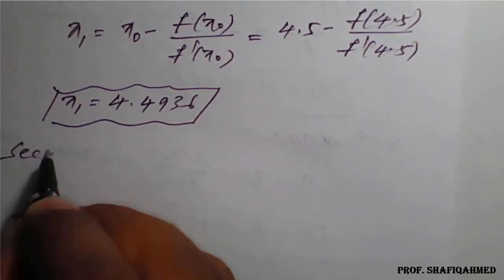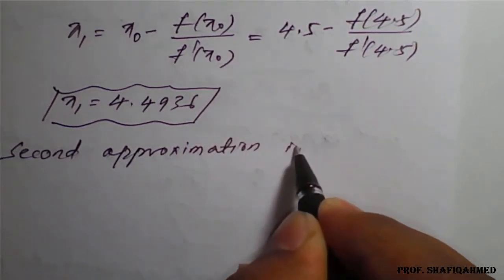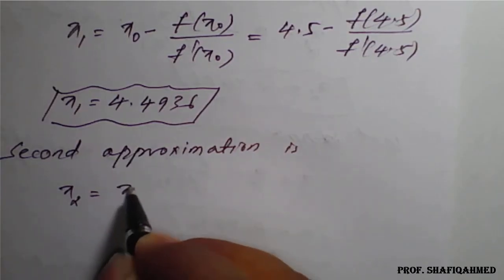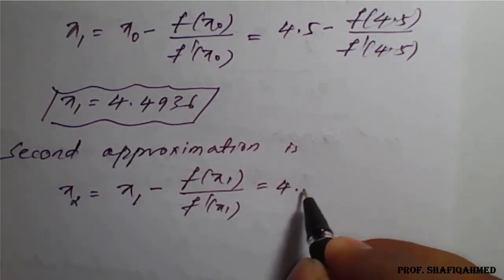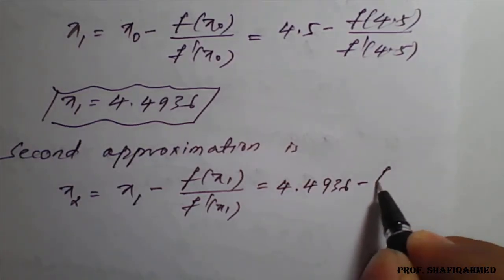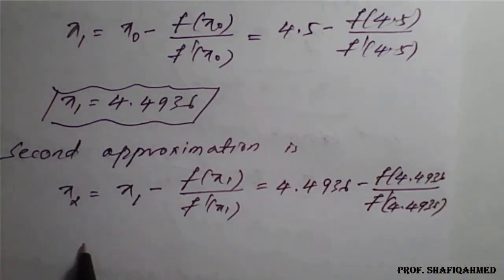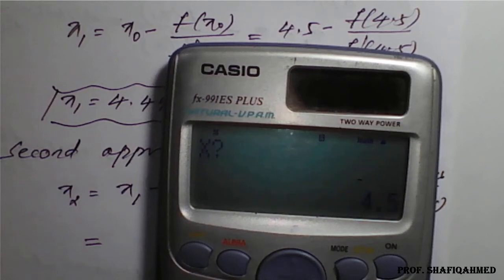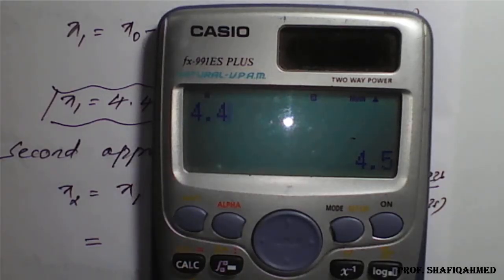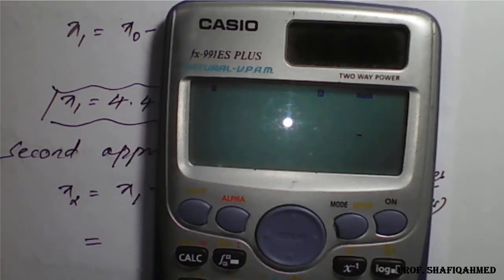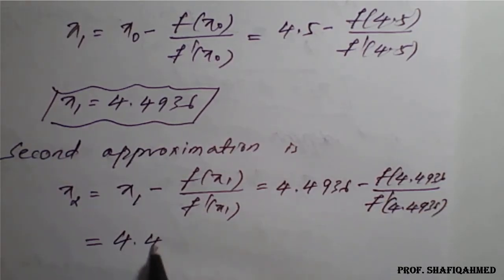Then we will go for the second approximation. x2 equals x1 minus f of x1 divided by f dash of x1, which is 4.4936 minus f of 4.4936 divided by f dash of 4.4936. We will replace the value of x as 4.4936 in the calculator, and see the result. It is 4.4934. Second approximation: 4.4934.